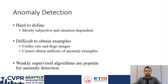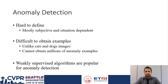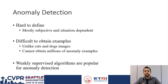Unlike other datasets in the domain of object detection or classification, it is also not easy to obtain anomaly examples. It is not possible to think of all possible kinds of anomalies and obtain training examples for each of those cases. For this reason, weakly supervised algorithms are generally popular for anomaly detection, as they can at least save the costly procedures of obtaining fine-grained labels.